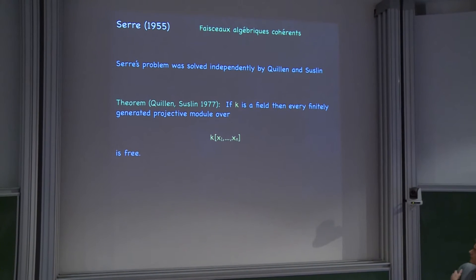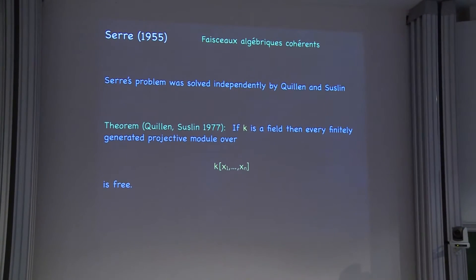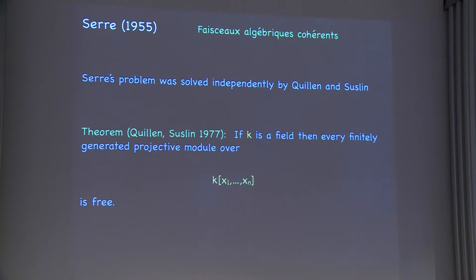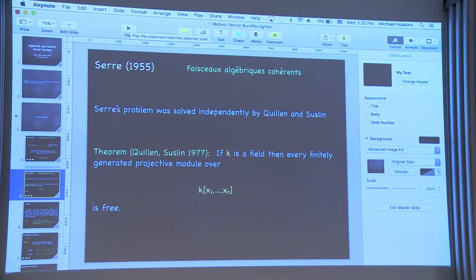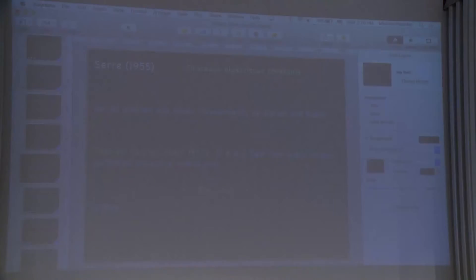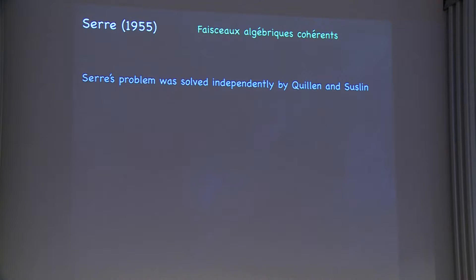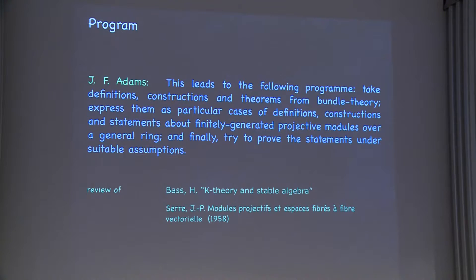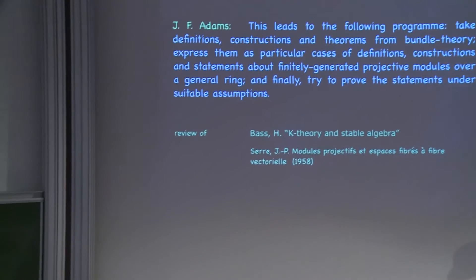The theorem was exactly that if k is a field, every finitely generated projective module over k is free. There was a whole bunch of problems like that, many of them promoted by Hyman Bass, Serre, and others. Adams kind of identified in his math review of these papers an ongoing program — he articulated it saying it leads to the following program: take definitions, constructions, and theorems from bundle theory and express them in terms of finitely generated modules over a ring.